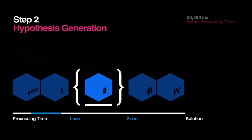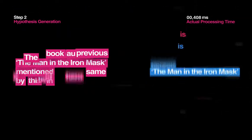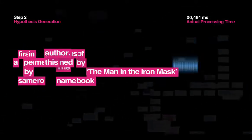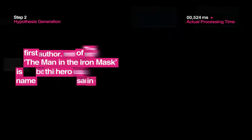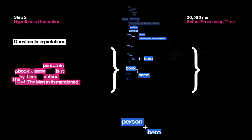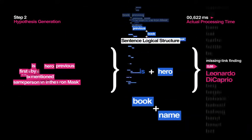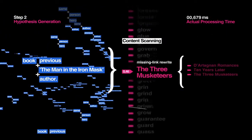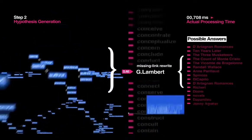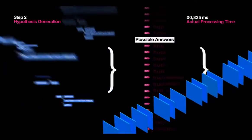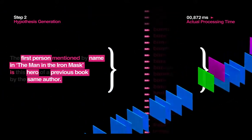Step 2: Hypothesis Generation. For each interpretation of the question, Watson quickly searches through hundreds of millions of documents to come up with thousands of possible answers. At this point, quantity trumps accuracy. It's more important for Watson to generate a large number of possible answers and narrow them down from there, because if the correct answer isn't included during the initial sweep, there is no possible way for Watson to identify and justify the right answer at the end.